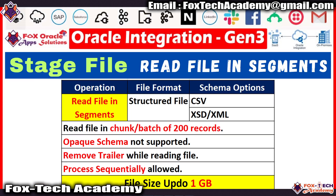The read file in segment operation is used to read data files having more than 100 MB in size. It allows you to read the data file in chunks of 200 records — considered as a batch of 200 records. So if our file has 1000 records, it will iterate the loop for every 200 records. With this operation, we can read the data file sequentially or in parallel, and we can read files up to 1 GB of data.